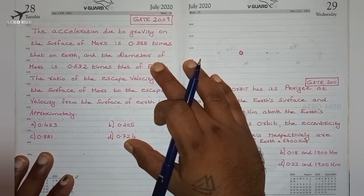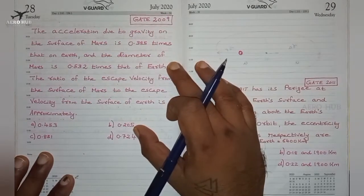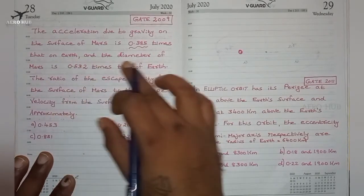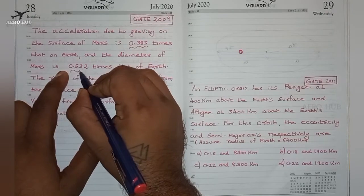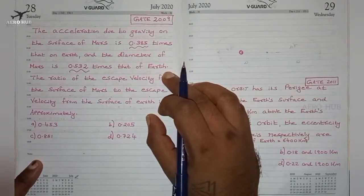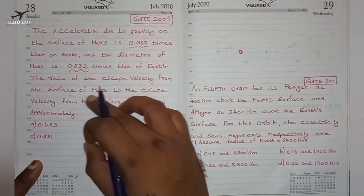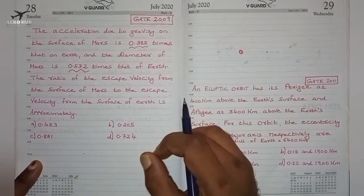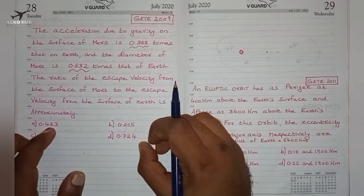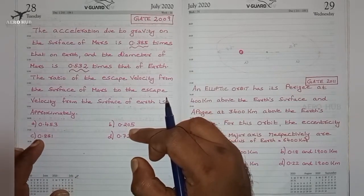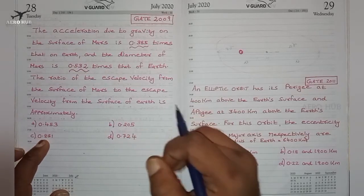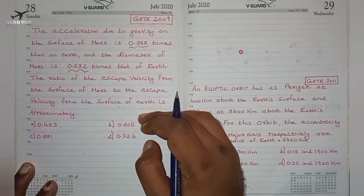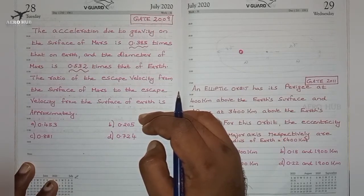This question was asked in GATE 2009. The acceleration due to gravity on the surface of Mars is 0.385 times that on Earth, and the diameter of Mars is 0.532 times that of Earth. The ratio of escape velocity from the surface of Mars to the escape velocity from the surface of Earth is approximately: option A 0.453, option B 0.205, option C 0.851, option D 0.724.